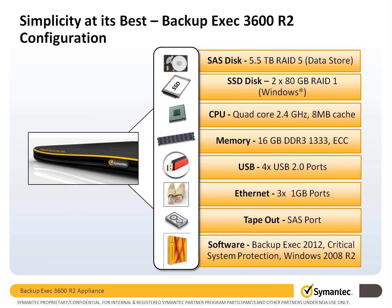The Backup Exec 3600 appliance has 5.5 terabytes of usable storage, which is run with deduplication and compression. Depending on how much duplicate data you have in your environment, you could store potentially significantly more — anywhere from 5.5 terabytes up to 10, 15, or even 20 terabytes — it really does depend on how much duplicate data you have.